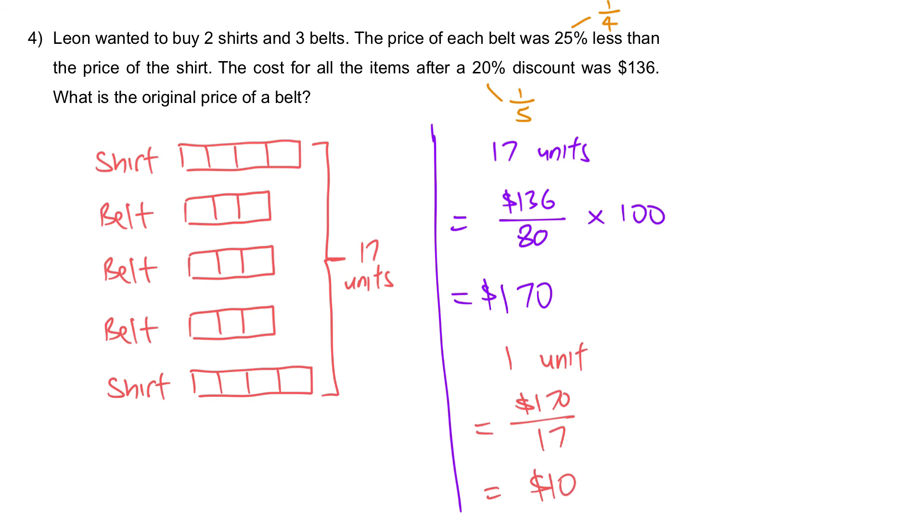Every unit here is 10. So what is the original price of 1 belt? 30. Let's write down the working. Original price of a belt. $10 for a unit. We're going to multiply it by 3 to get the answer. $30.